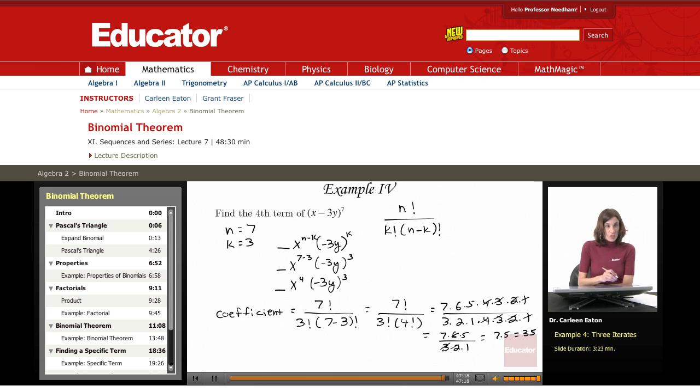I know that my coefficient is then 35. That's what's going to go in this blank. So, I'm going to end up with the fourth term is going to be 35. I'm going to put 35 right here in this blank.